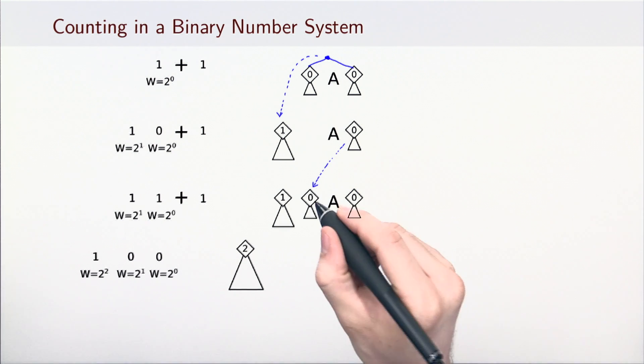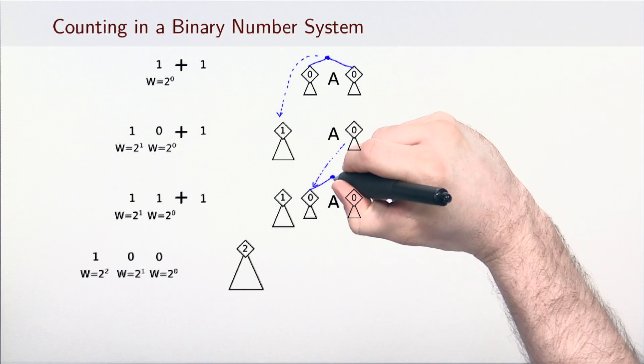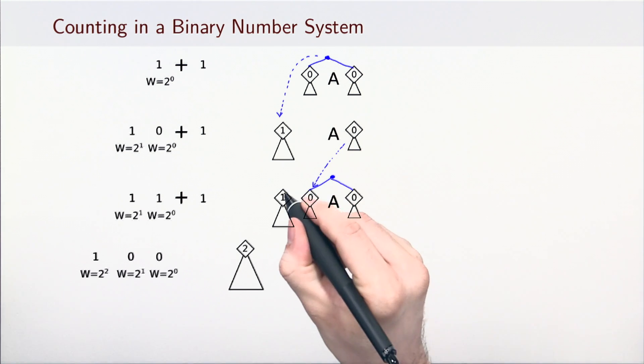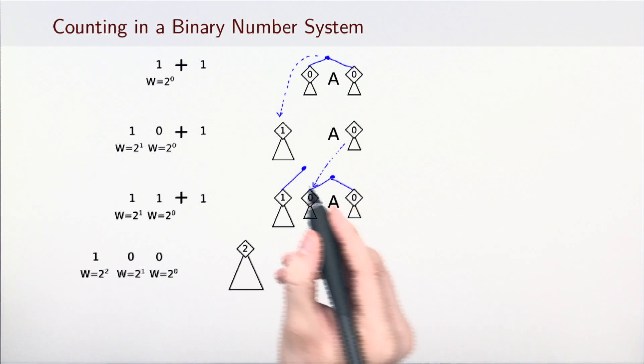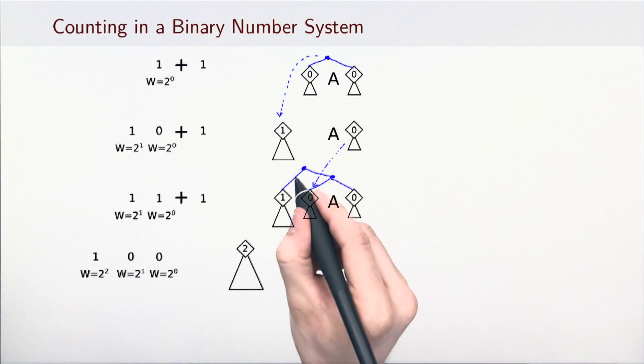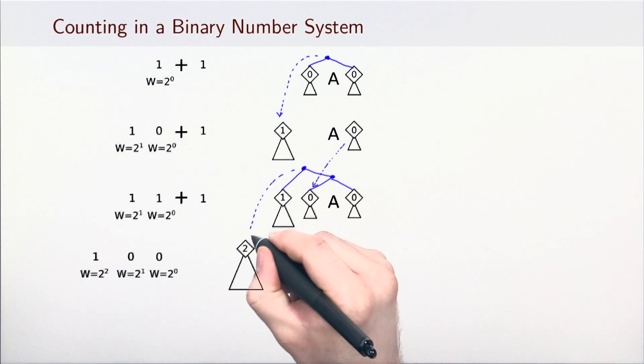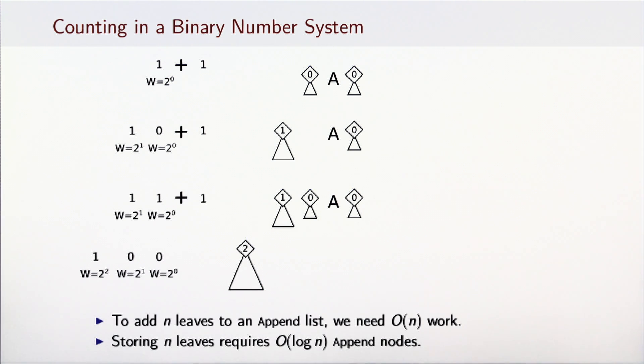Next time we add a tree at level 0, we will first have to link the two trees at level 0, which corresponds to the first carry operation, and then link the two trees at level 1, which corresponds to the second carry operation. Linking the trees in the same order as we count in a binary number system results in a similar pair of properties.